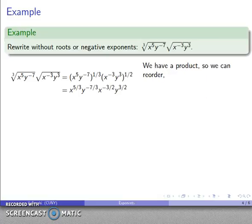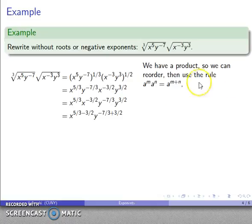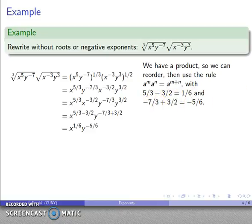And now I have a product, so I can reorder the product any way I want to. And for convenience, I'll put all of the x exponents together and the y exponents together. And I have the product rule for exponents. If I'm multiplying two things with the same base, the product is going to be the sum of the two exponents. Now I have to subtract 5 thirds minus 3 halves. I have to add 7 thirds plus 3 halves. And I'll do a little bit of fraction arithmetic. 5 thirds minus 3 halves is 1/6. 7 thirds plus 3 halves is minus 5/6. And there's my exponential expression so far.